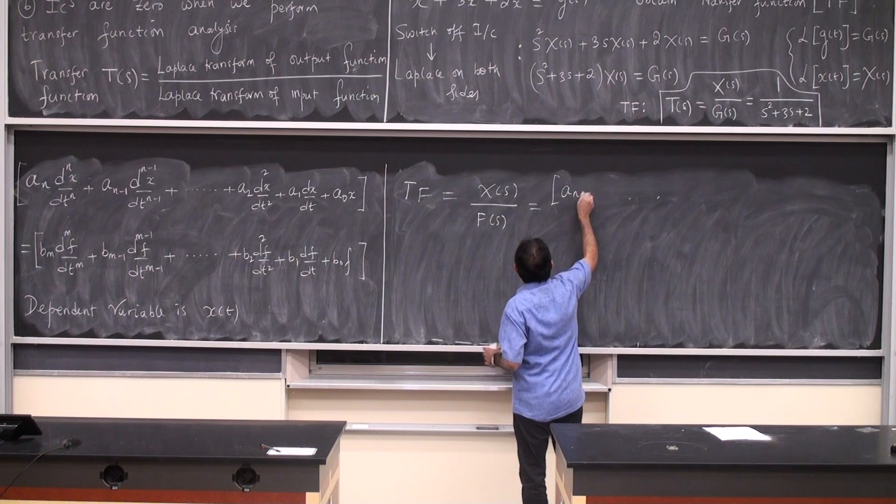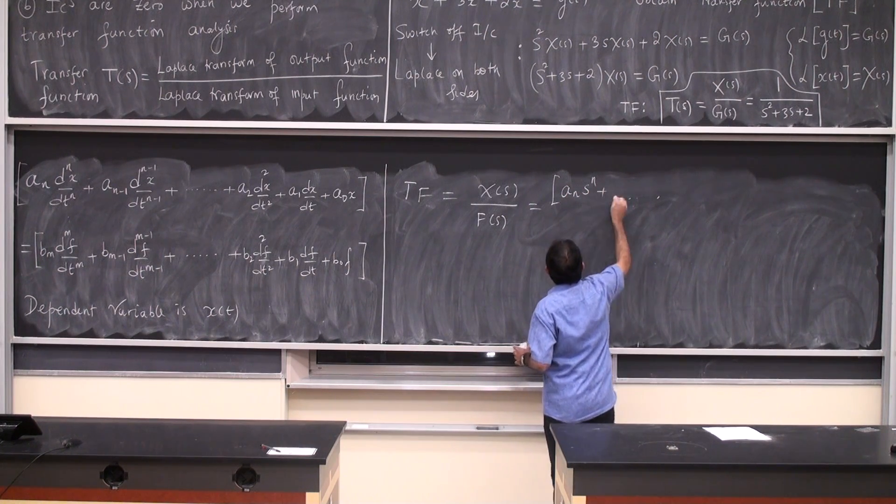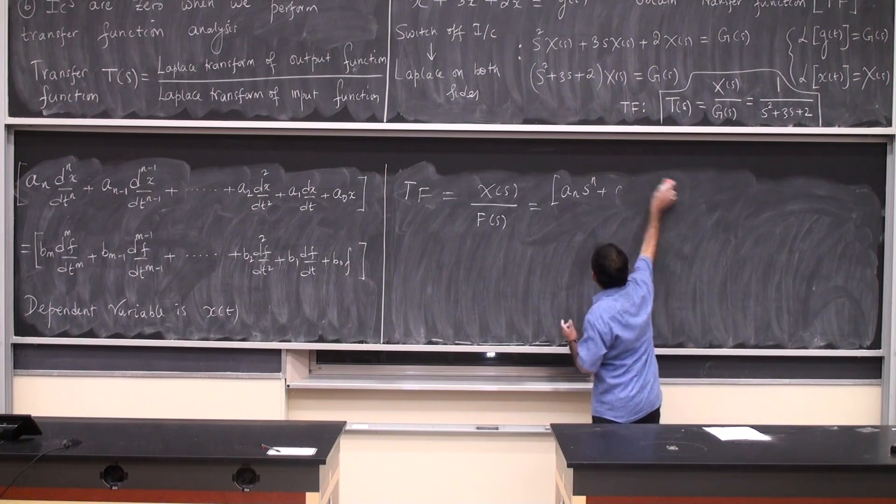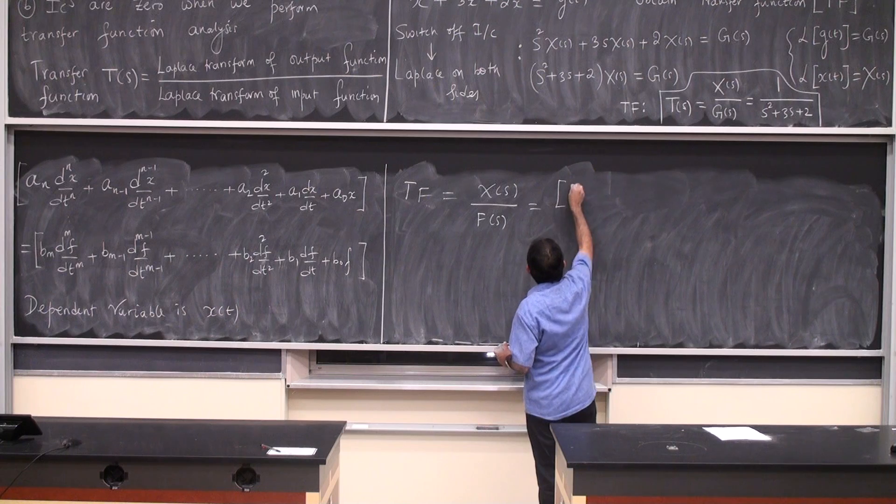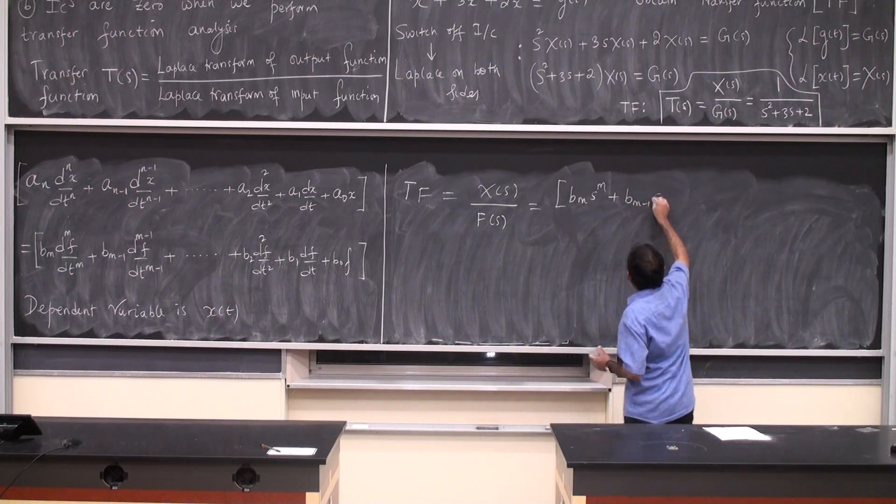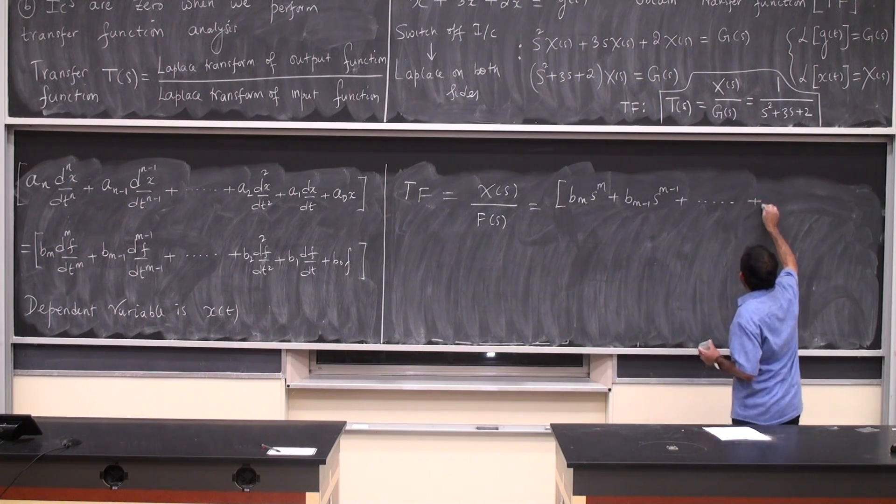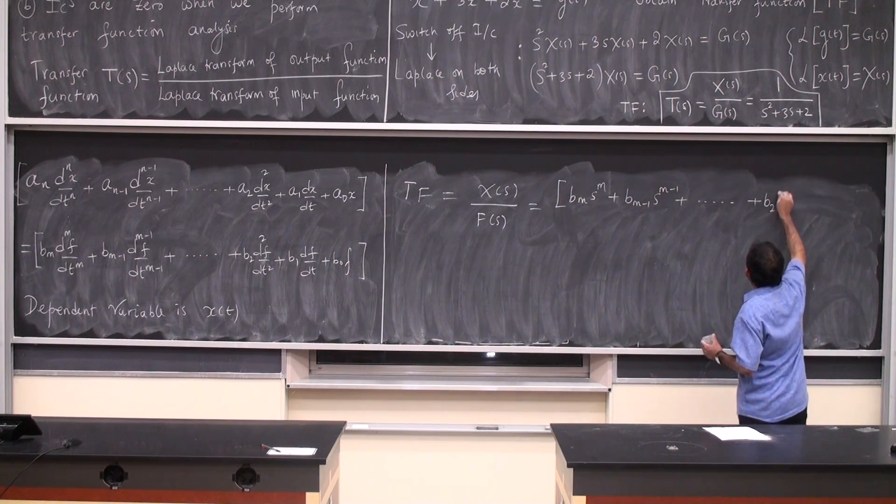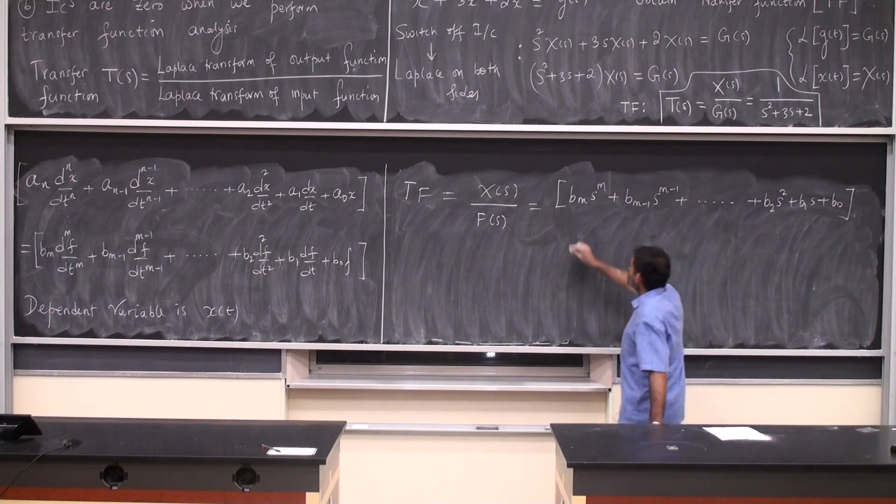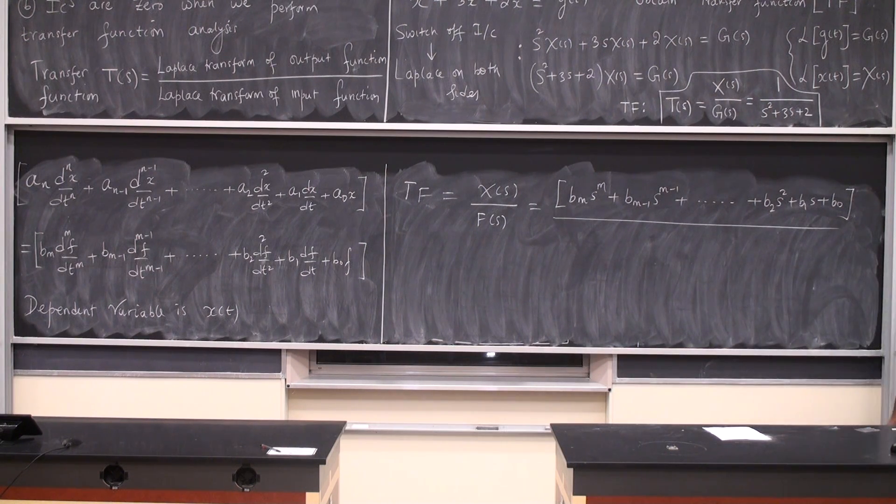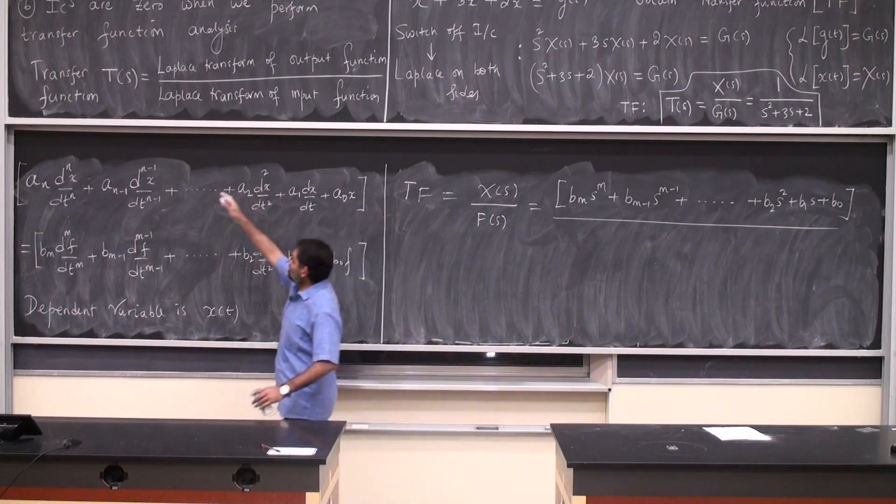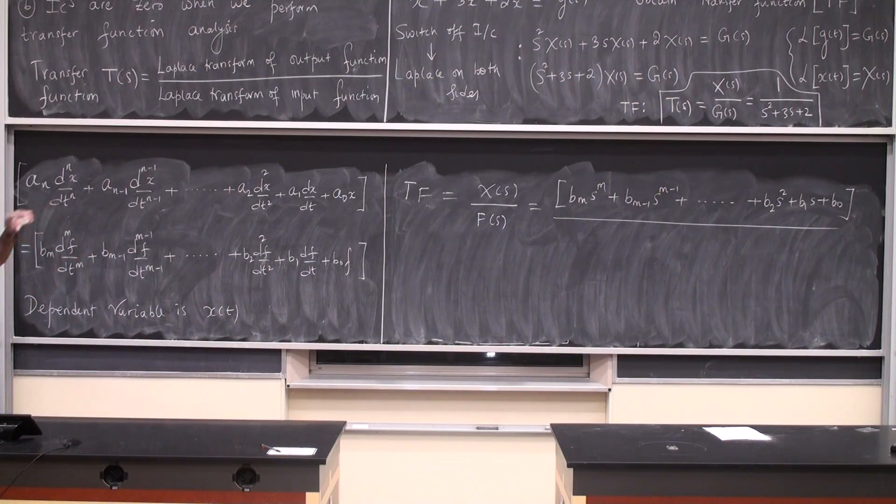This is going to be a_n s to the power n, a_(n-1)... I'm sorry, this is the inverse of that. This is b_m s to the power m, all of this divided by stuff in the denominator which is going to come from the Laplace transform of all of these creatures. That's what we've done for the problems we've solved.